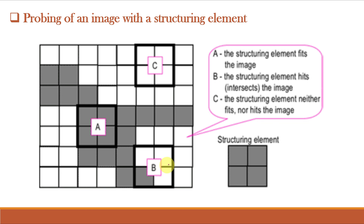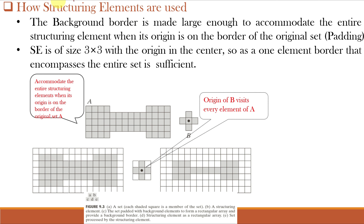If it is at position B, the structuring element only intersects the image — this portion is intersecting, other pixels are empty. While for C, the structuring element neither fits nor hits the image. The background border is made large enough to accommodate the entire structuring element when the origin is on the border of the original set, by padding.